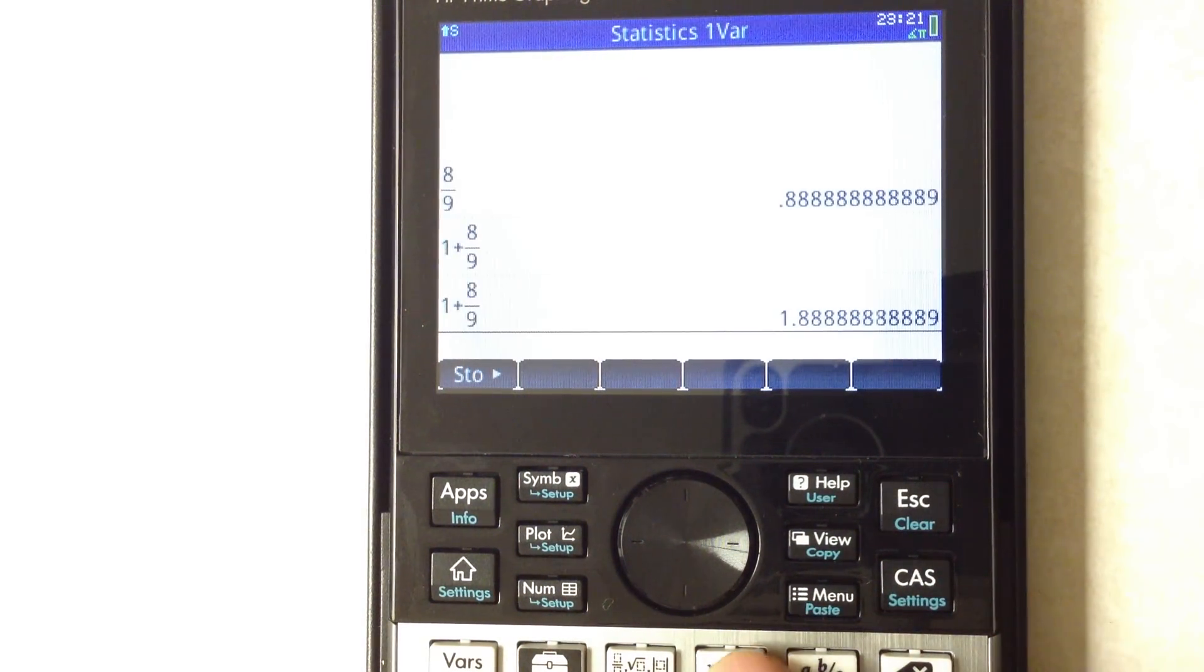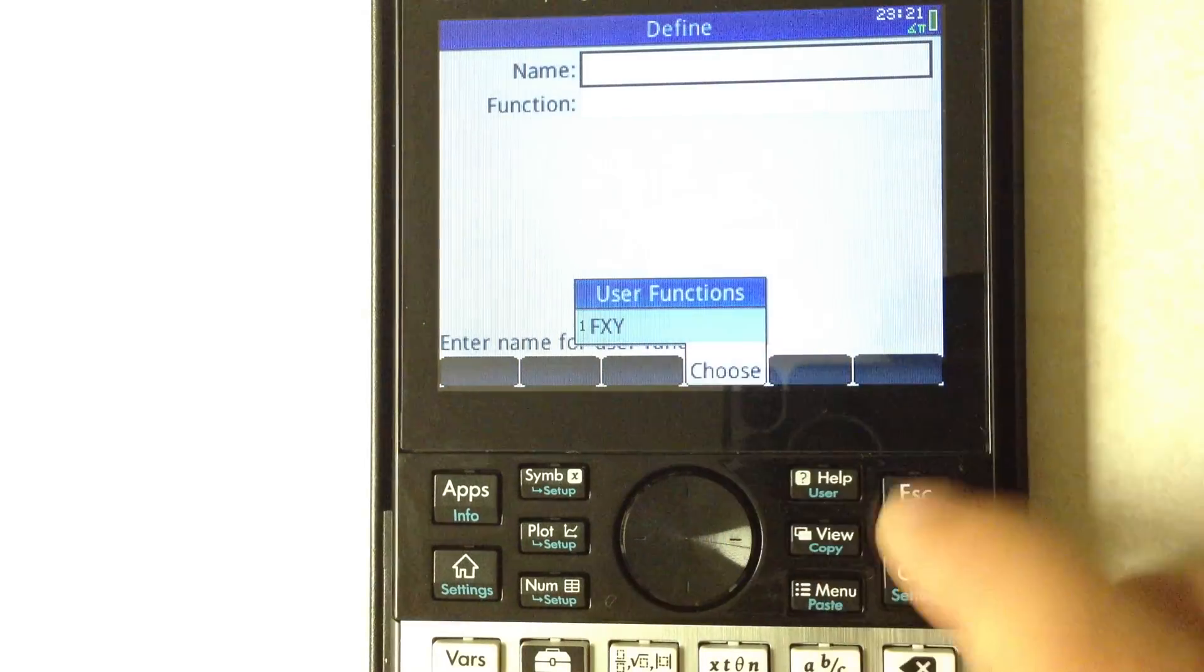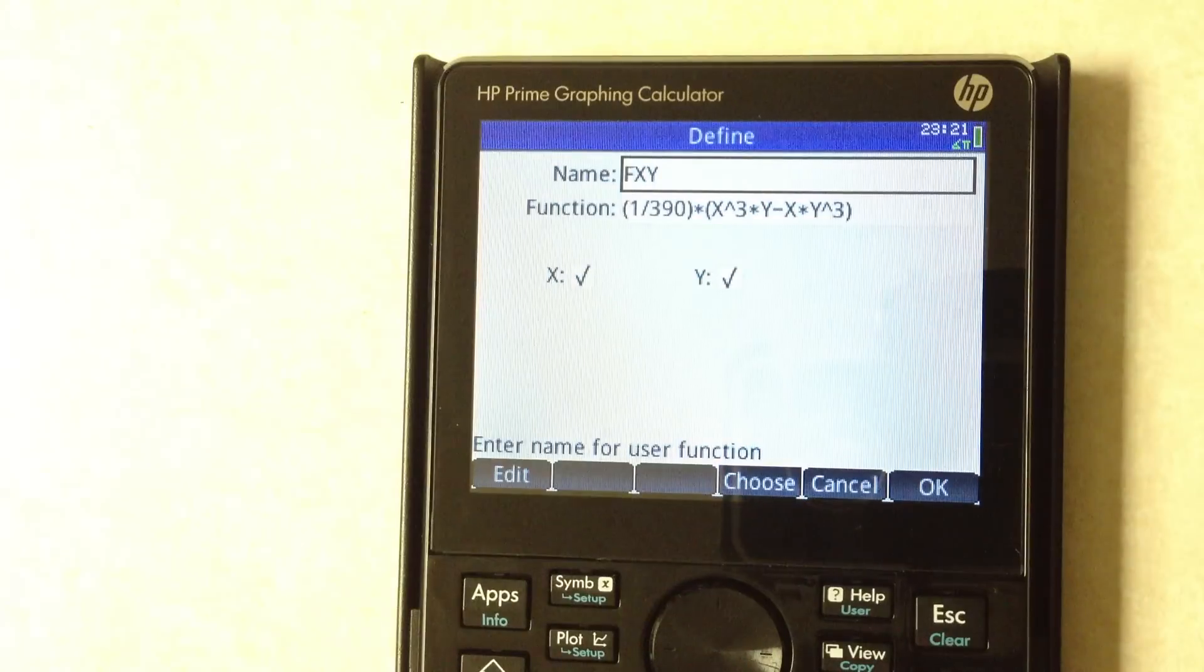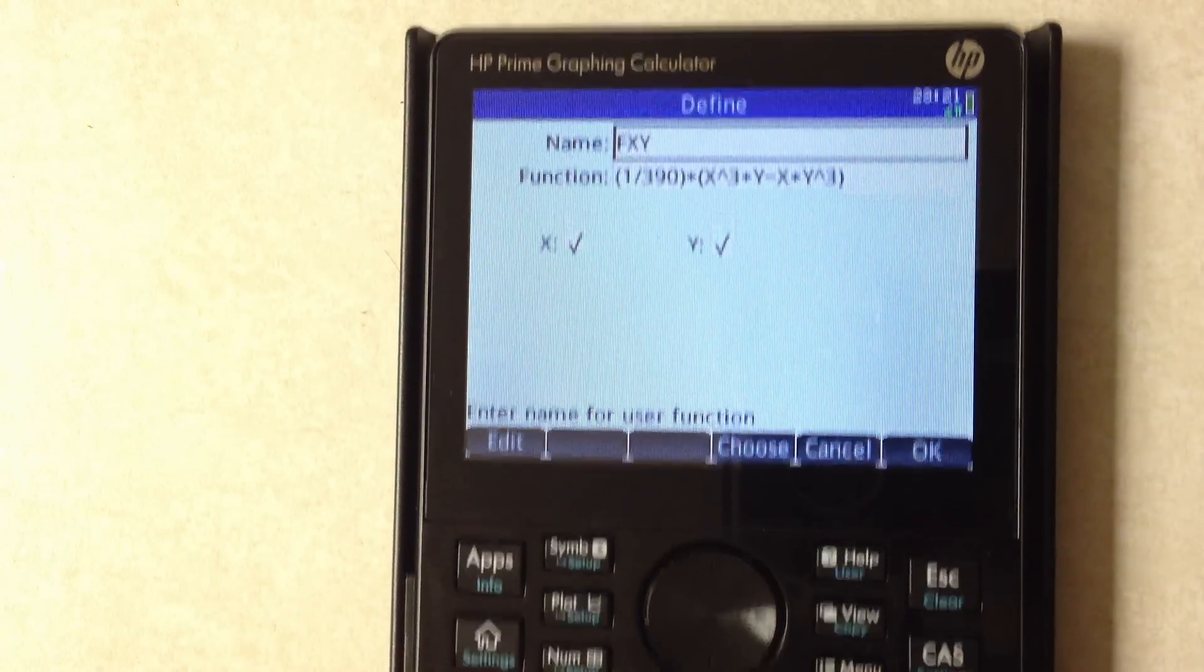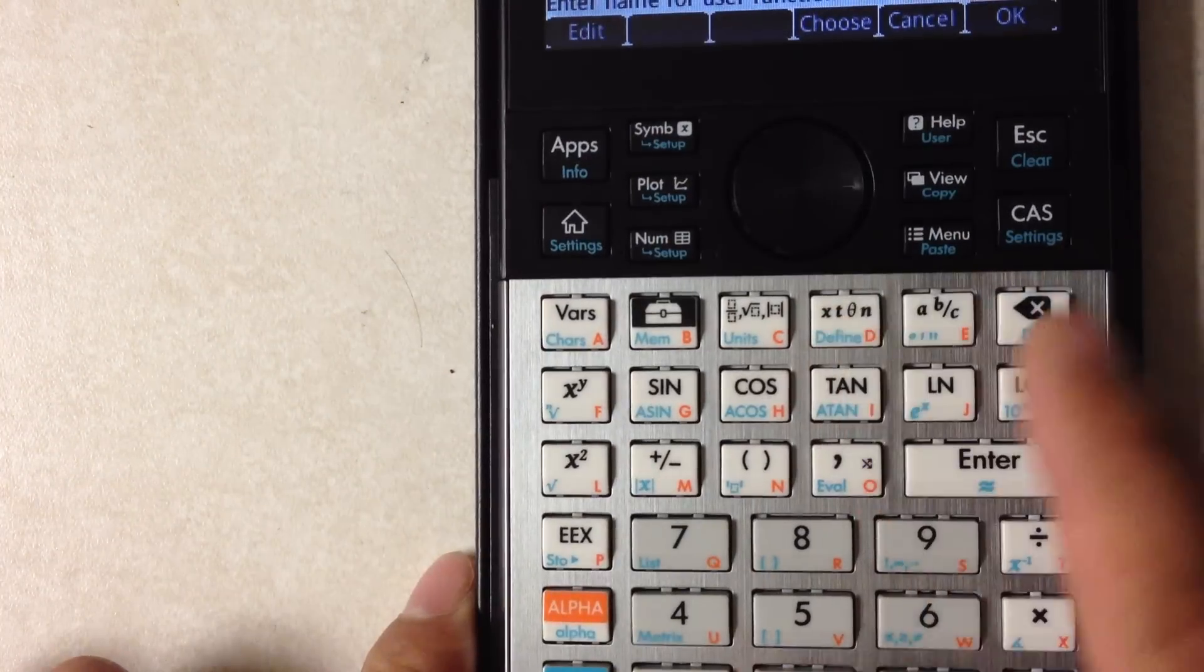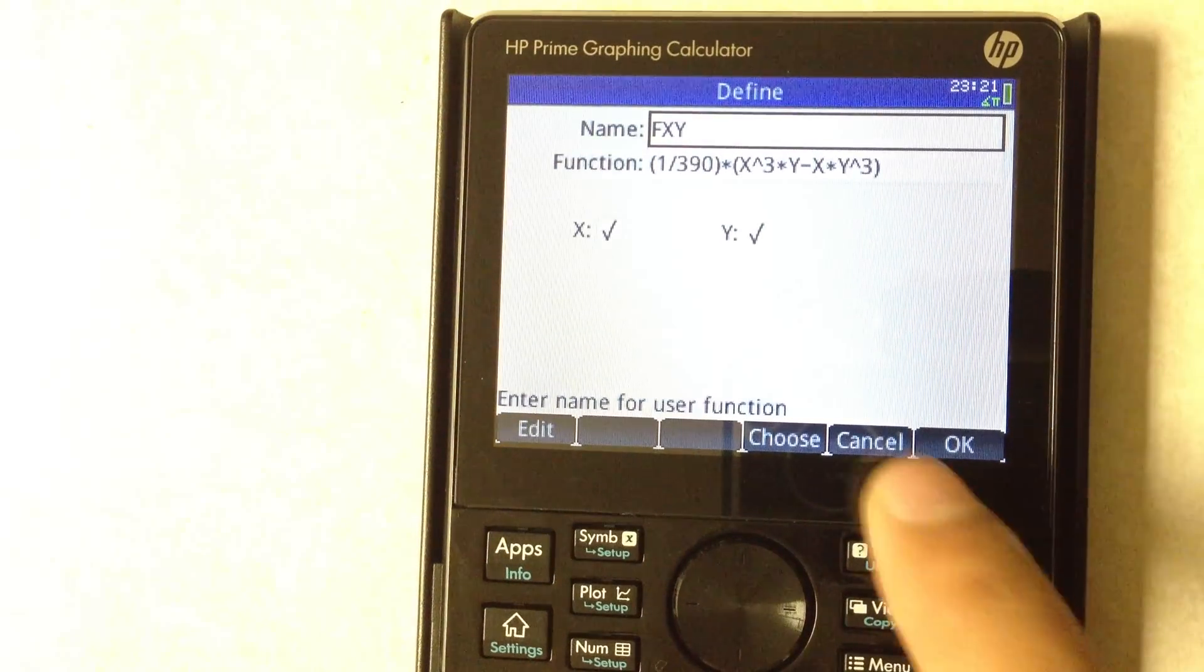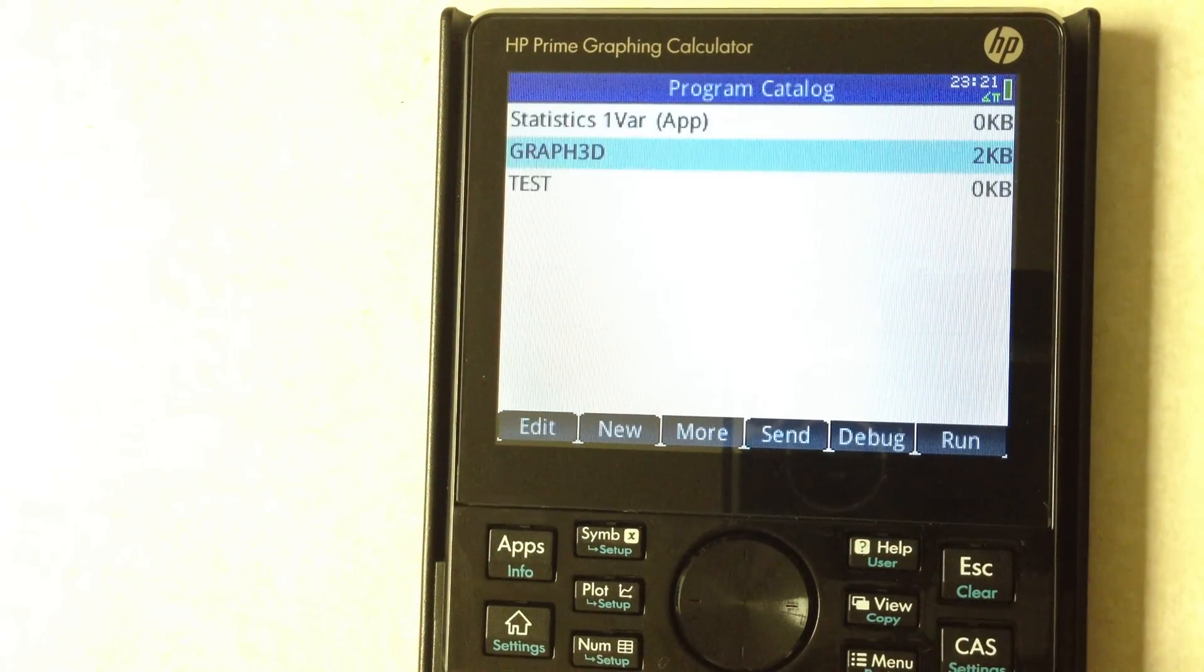I first defined a function called fxy and this is what my function looks like. So that was using shift define to create that.